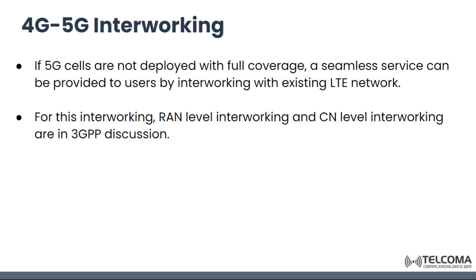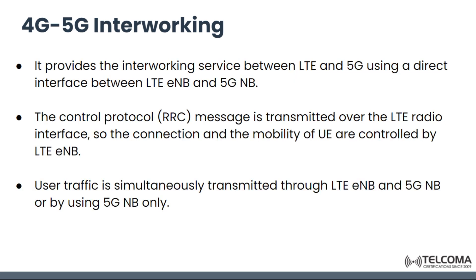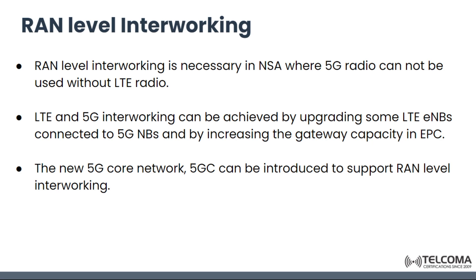For this interworking, RAN-level interworking — that is, Radio Access Network level interworking — and core network level interworking are in 3GPP discussion. RAN-level interworking provides service between LTE and 5G using a direct interface between the eNodeB and the 5G Node B. The control protocol RRC is transmitted over the LTE radio interface, so connection and mobility of users are controlled by the eNodeB.